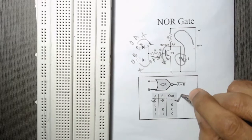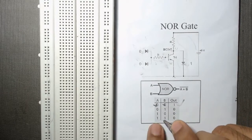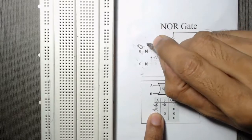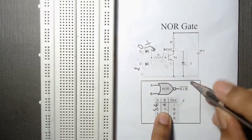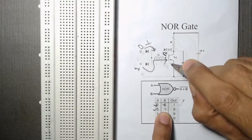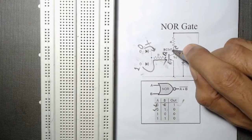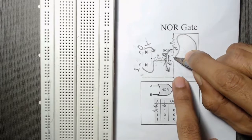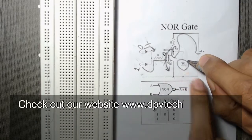For the second set of inputs, that is 0,1: if A is 0, this diode will be in reverse bias so no current flows. But B is 1, so this diode will allow current to flow through the 1k resistor. There will be base voltage, so the transistor will allow current to flow from collector to emitter.